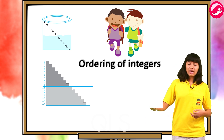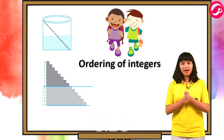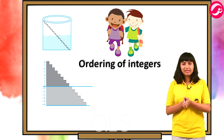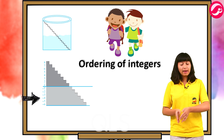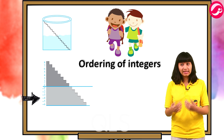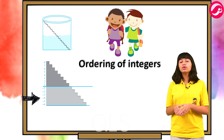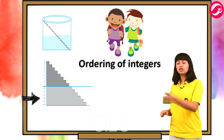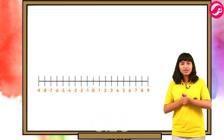Neeche ki steps minus mein mark karte gaye. After that the water level went down by one more step — it was now minus four. Apne dekha paani ka level kam ho gaya — minus four, minus three se chhota hua.